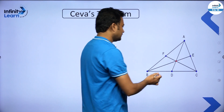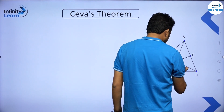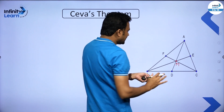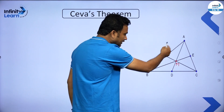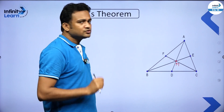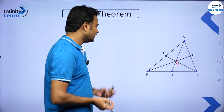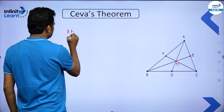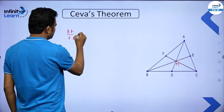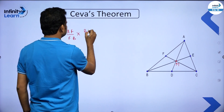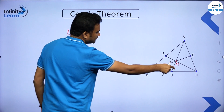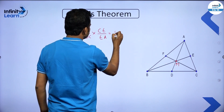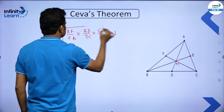Let us assume the intersection point is M. When we draw the cevians, each cevian divides the opposite side in a certain ratio. Then the product of these ratios is always one. You can write the ratios from any vertex: AF upon FB into BD upon DC into CE upon EA. This multiplication is always one, and this is called Ceva's theorem.